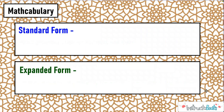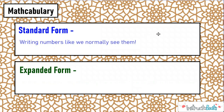Let's norm on some mathcabulary. What do I mean when I talk about standard form? When I talk about standard form, I'm talking about writing numbers like we normally see them, using our normal digits, putting them in the place value — 342, 342 and 5 tenths — just how we normally would see them.